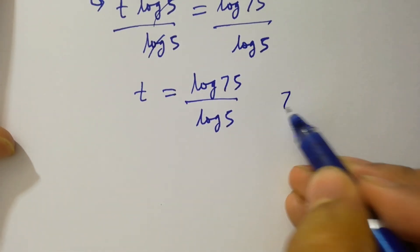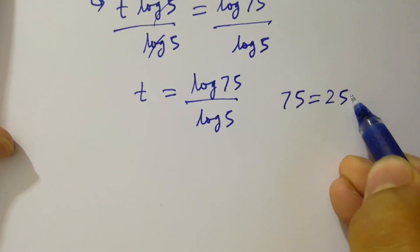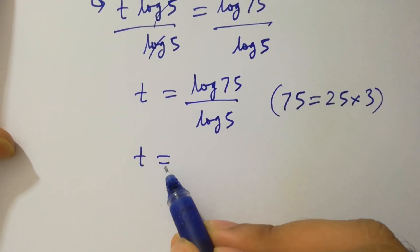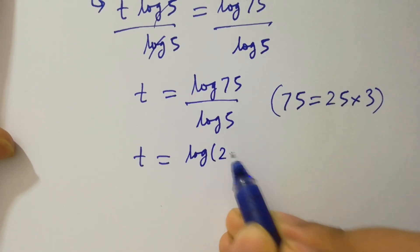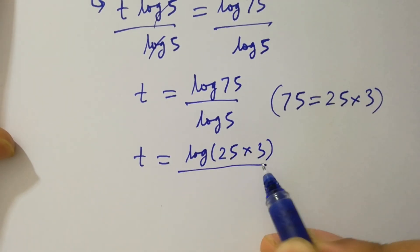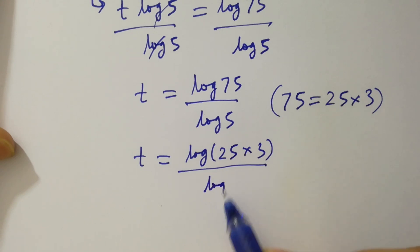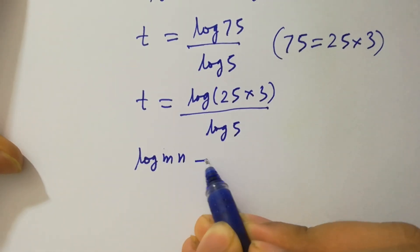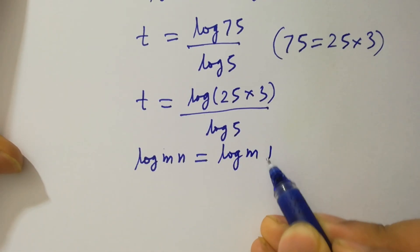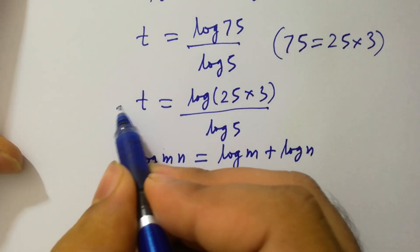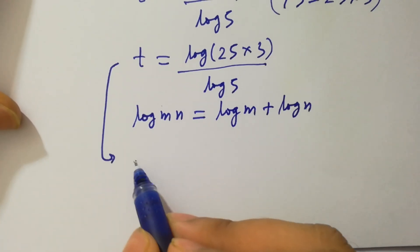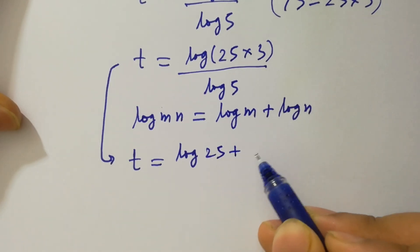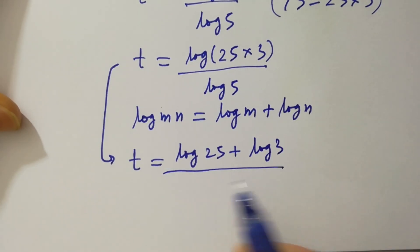Since 75 equals 25 times 3, t will be equal to log of 25 times 3 over log 5. Since log m·n equals log m plus log n, we have t equal to log 25 plus log 3 over log 5.